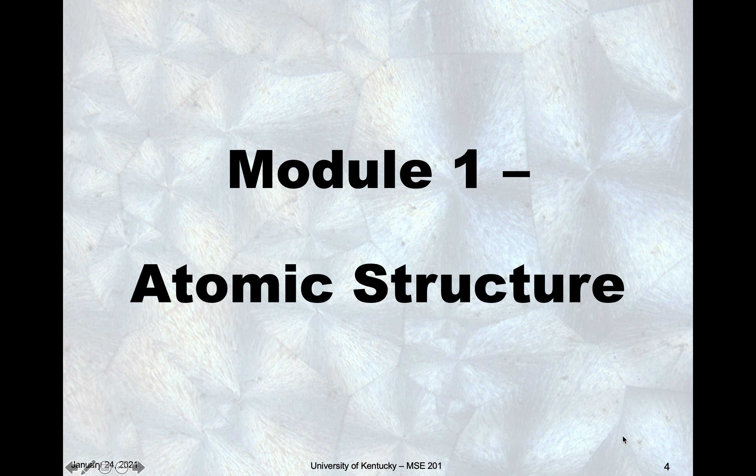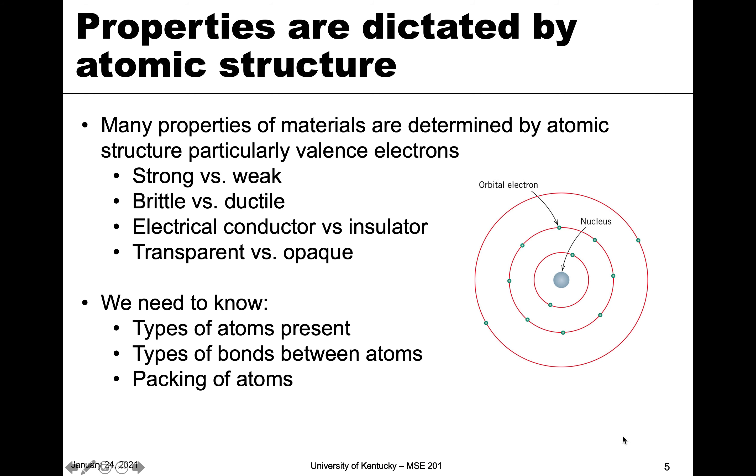Why do we care about atomic structure? We care about it because material properties are dictated by this atomic structure. What type of material we have and what properties that material has are determined by these atomic structures, in particular the valence electrons. Whether something is strong or weak, brittle or ductile, whether something is a conductor or an insulator of electrons, whether something is transparent or more opaque—all of these properties start with the atomic structure of an atom.